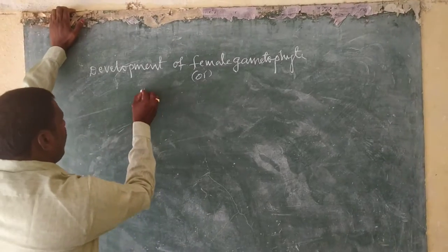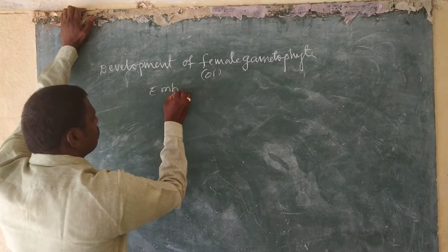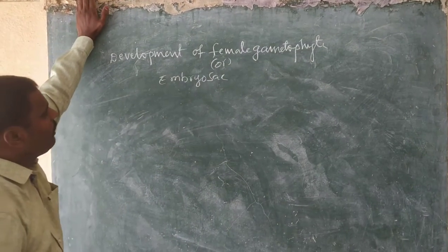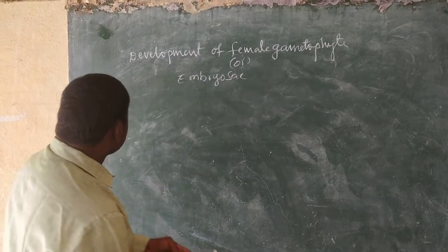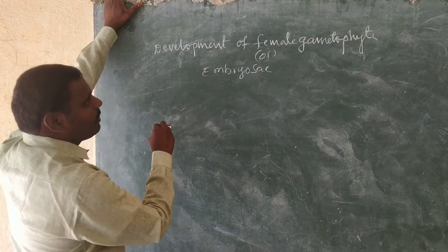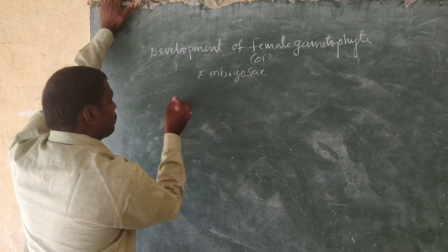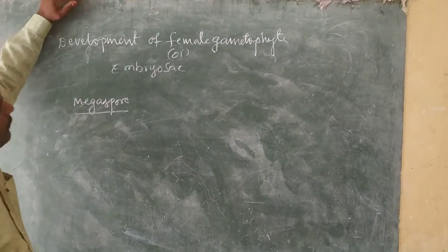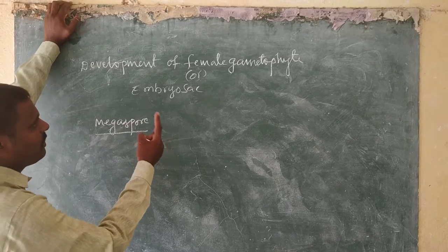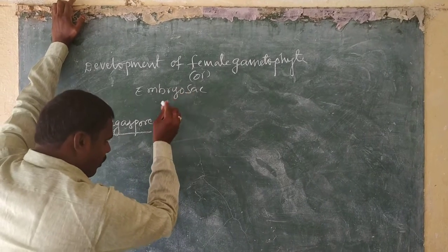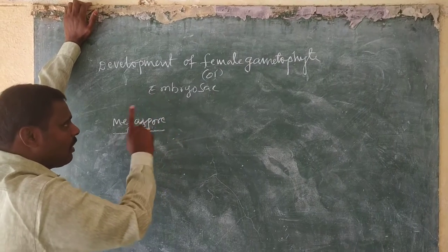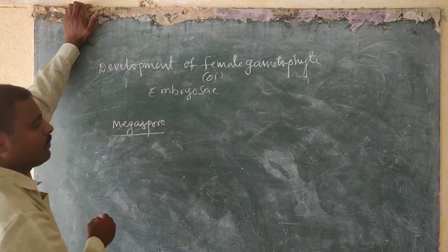Development of the female gametophyte or embryo sac. The megaspore is the initial cell for the development of the female gametophyte or embryo sac. Specifically, it is the functional megaspore that gives rise to the embryo sac.